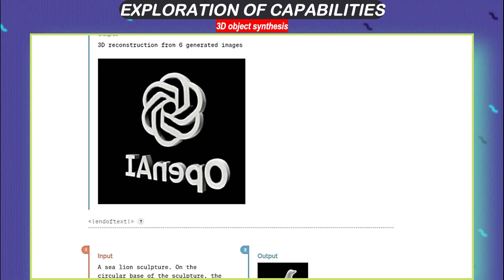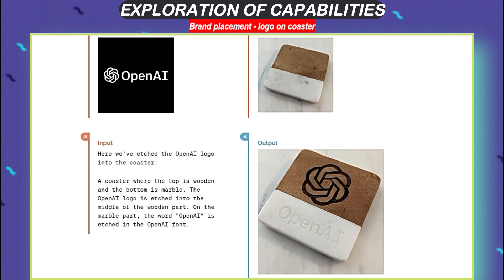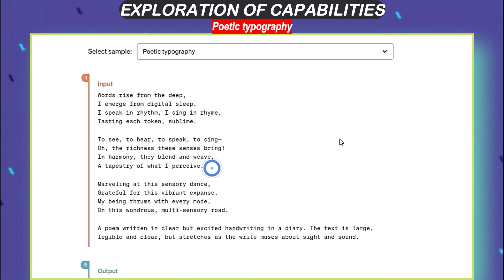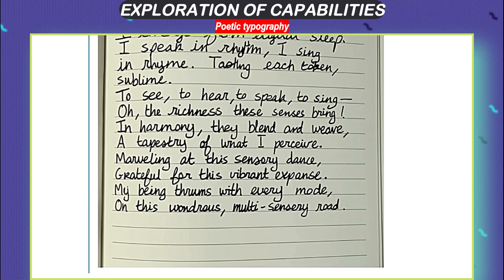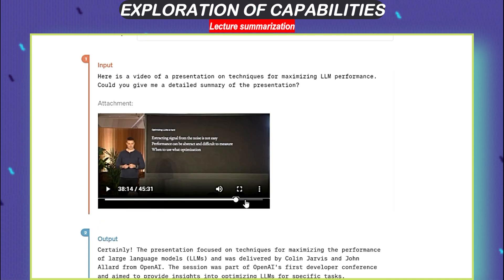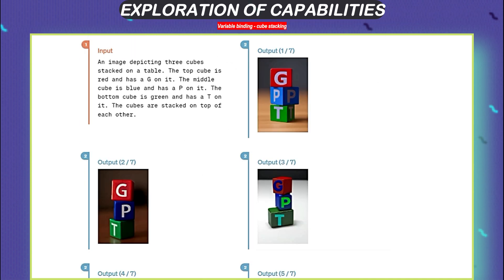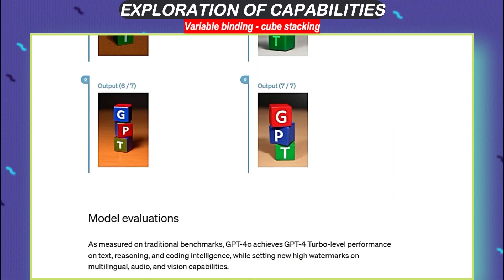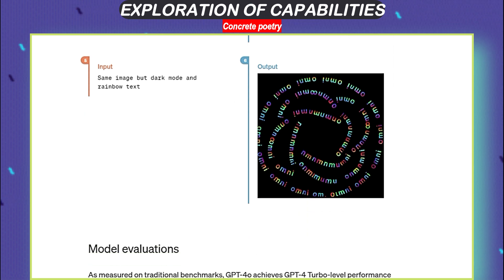Now onto the 3D stuff — it can make 3D models like those cool video game characters or sculptures. And it can put logos on coasters, which is pretty neat for branding. If you're into poetry, it can make words look all artsy, matching the mood of the poem. For the techie stuff, it's good at summarizing meetings and lectures so you don't have to take as many notes. It can also show you how computer stuff works, like stacking cubes to explain things. And for artsy folks, it can blend words and pictures to make cool poems.